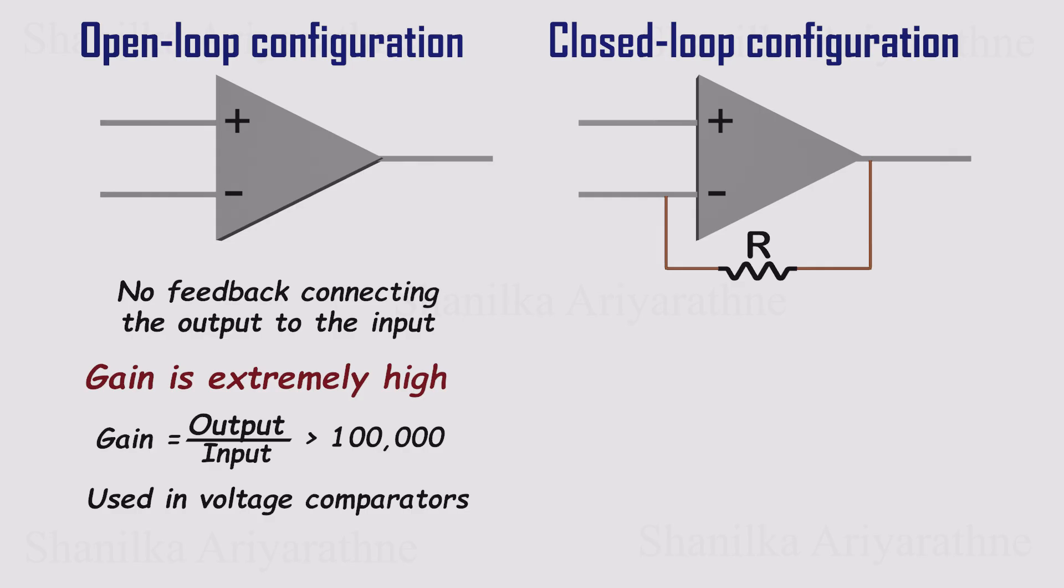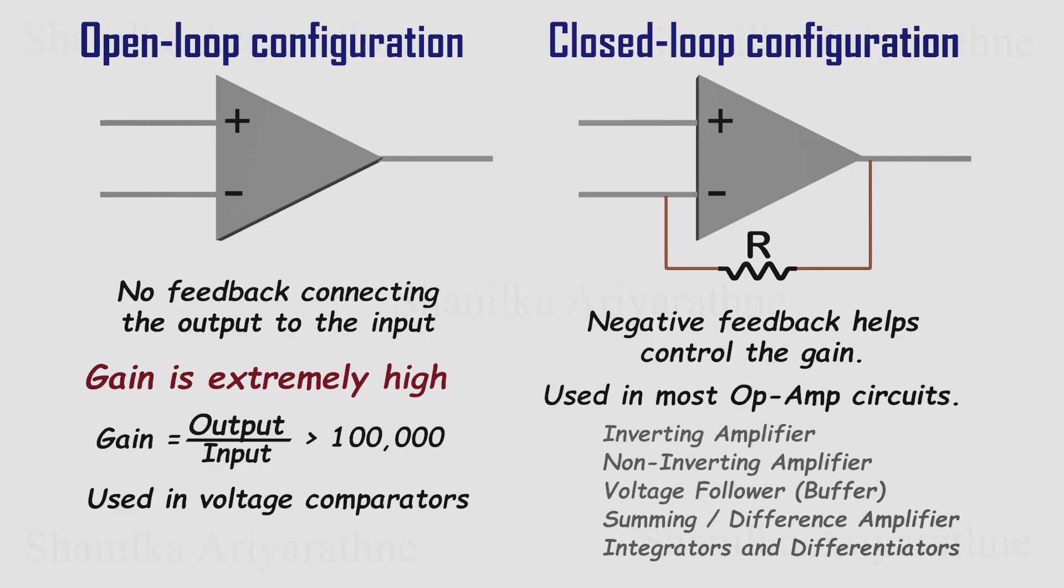Most of the time, though, op amps are used in closed loop mode, with negative feedback. Here, the output is fed back to one of the inputs, usually through a resistor network. Negative feedback tames the gain, keeps the circuit stable, and makes the op amp respond in a predictable, linear way. Closed loop designs are used in all kinds of circuits: inverting and non-inverting amplifiers, summing amps, difference amps, integrators, differentiators, you name it.